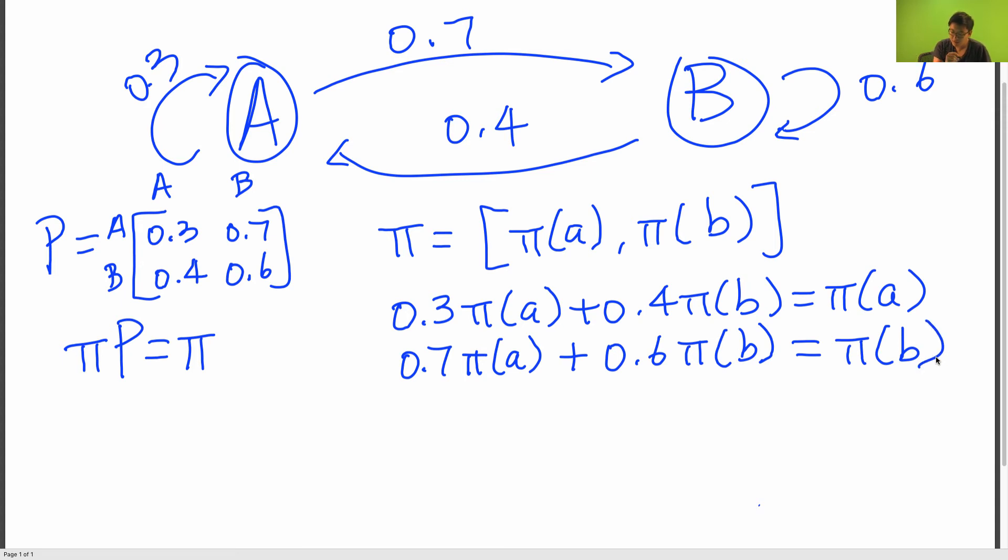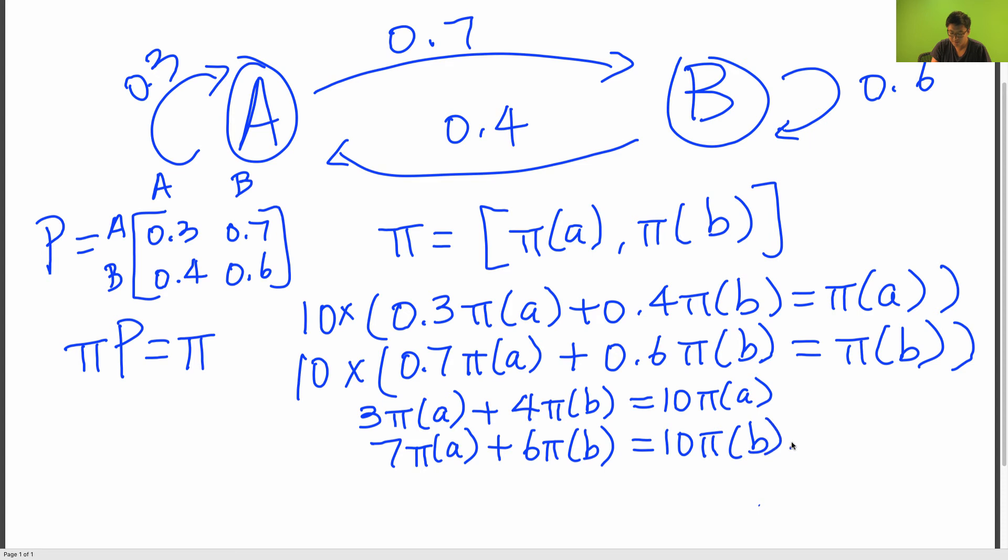So I'm going to multiply both of these equations by 10 just to make everything easier to work with. So I'm going to have 3 pi A plus 4 pi B is equal to 10 pi A, and then 7 pi A plus 6 pi B is equal to 10 pi B.